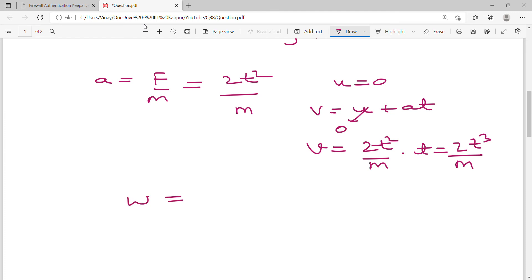So how much is it? W is equal to F value 2t² into V. V is how much? 2t³ upon M into dt. Since it is a definite integral, so constant of integration will not come in the picture.